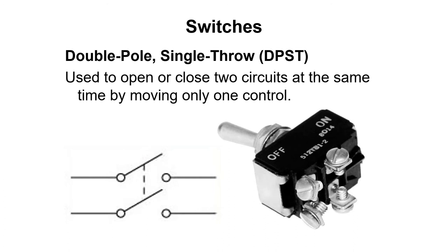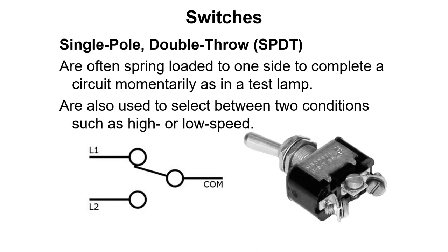The double pole single-throw switch allows us to open or close two circuits with one switch. The single pole double-throw switch acts like the train switch, allowing us to change current flow from one circuit to another.